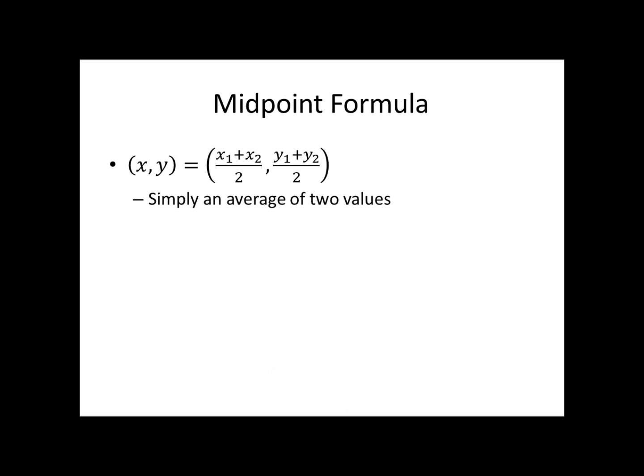The midpoint formula is a refresher — the midpoint is simply the average of two values. We add our two x values and divide by 2, and add our two y values and divide by 2.